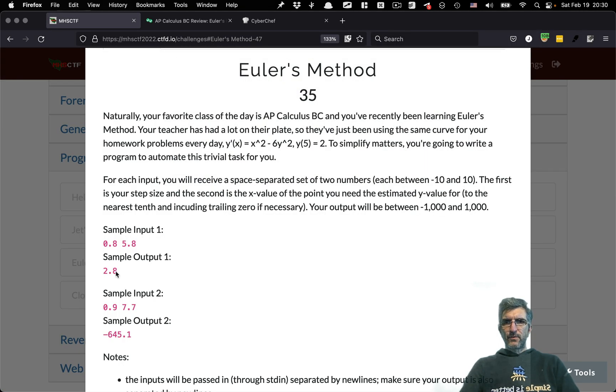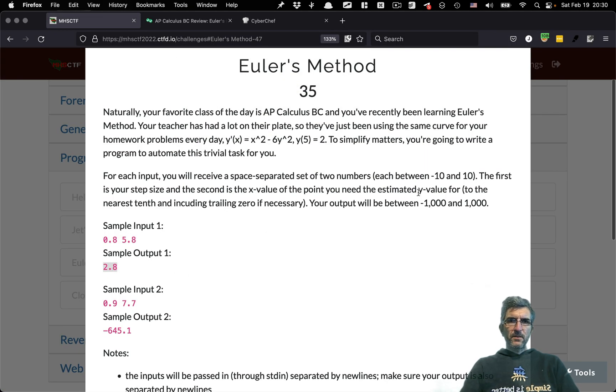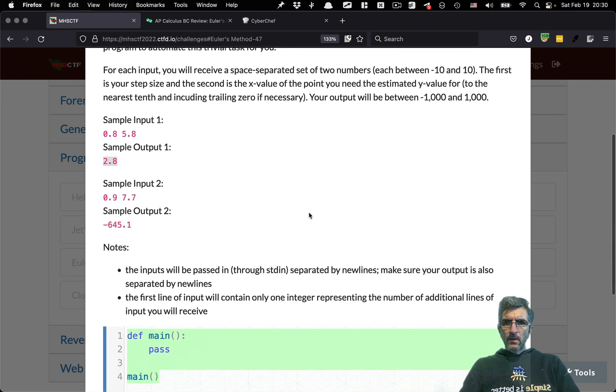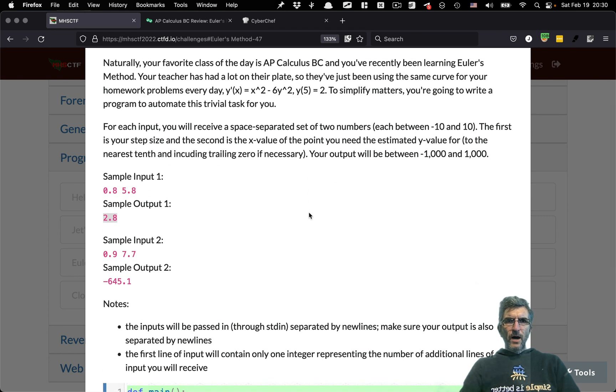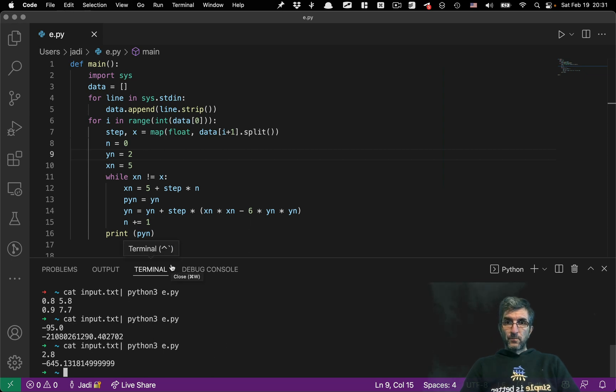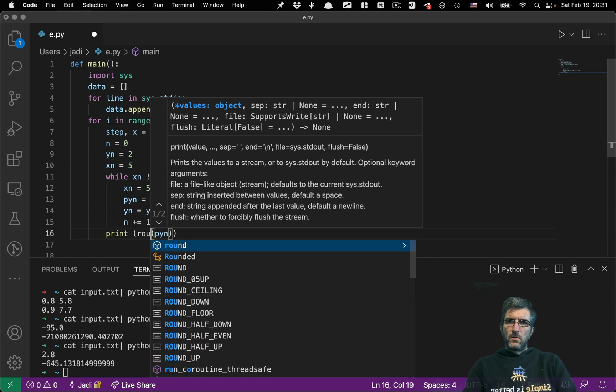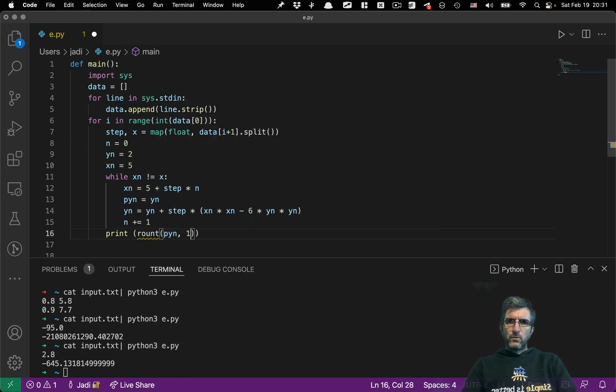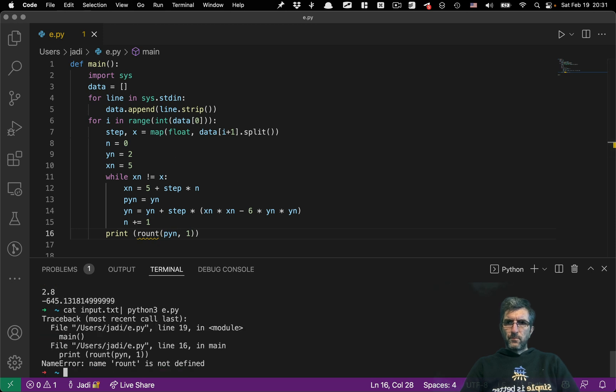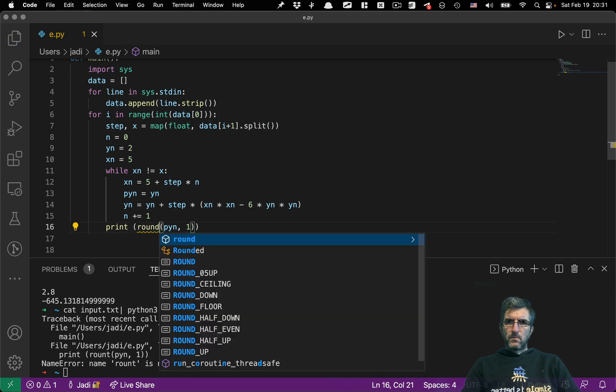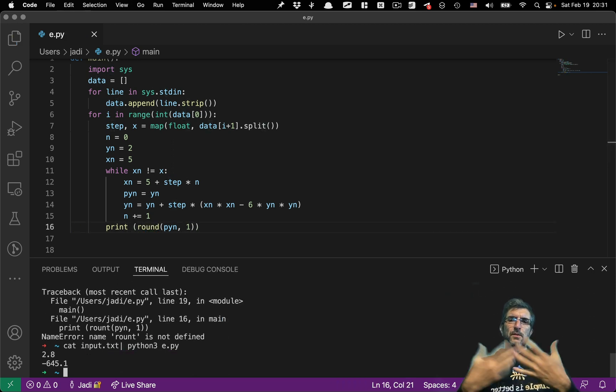At least based on what we had here. In the question it says when you are returning the value, you have to round it and just show one decimal digit. So I will go with round of this with one decimal digit. And now we have the correct answer.